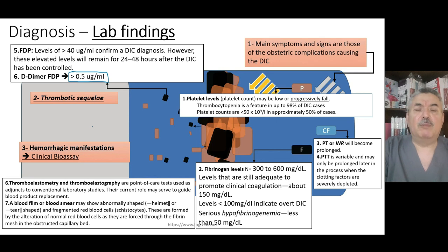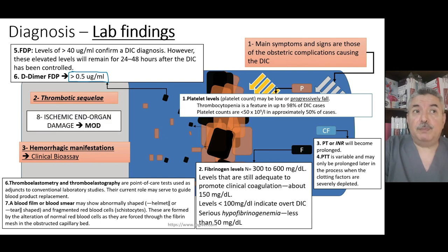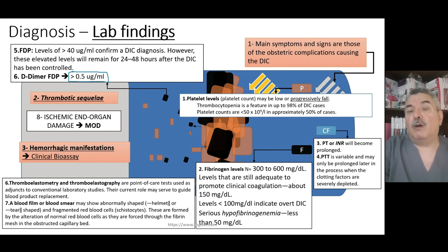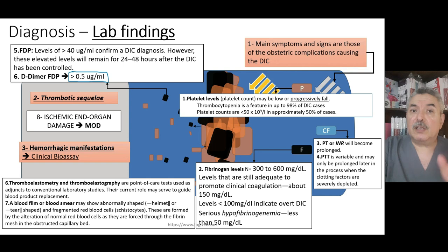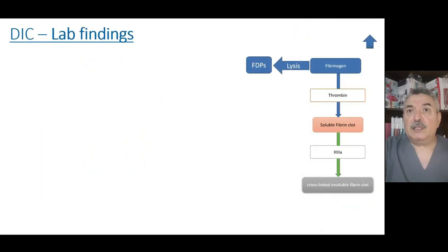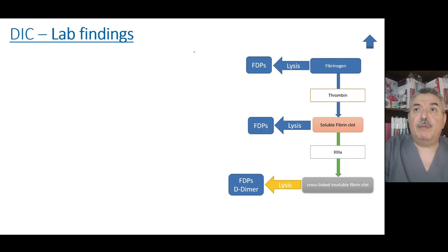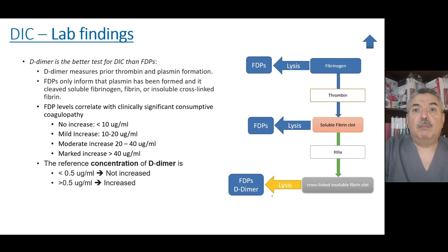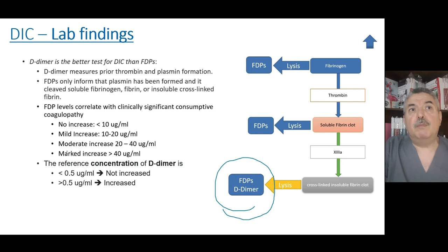Other tests include blood film or smear, and organ dysfunction tests — creatinine, liver functions, and liver enzymes — because these are a sequel of the thrombotic activity of disseminated intravascular coagulation. FDPs above 40 micrograms per milliliter confirm DIC. D-dimer above 0.5 micrograms per milliliter indicates DIC. D-dimer is the most important marker to measure in cases of DIC.